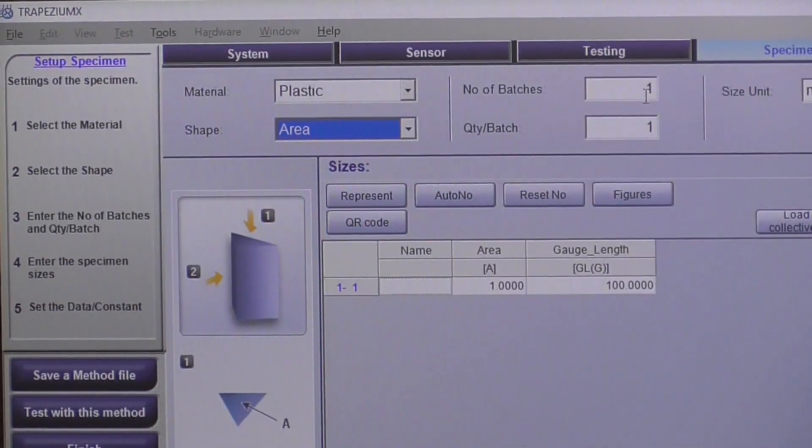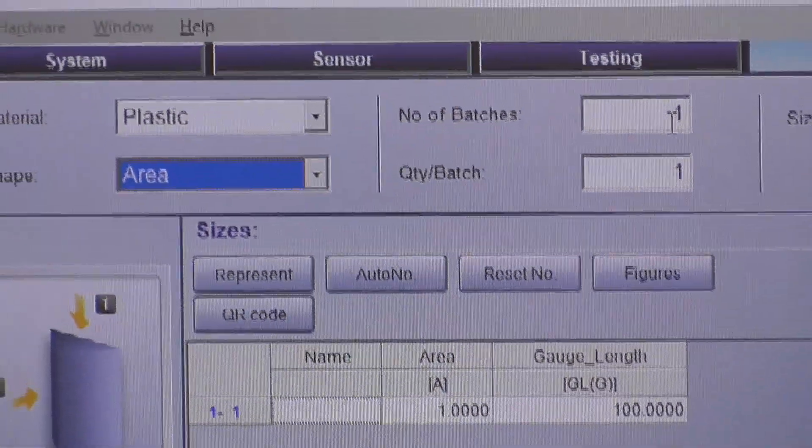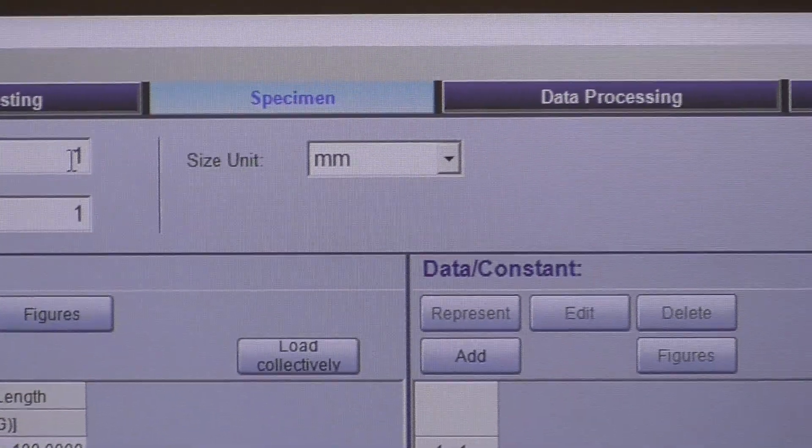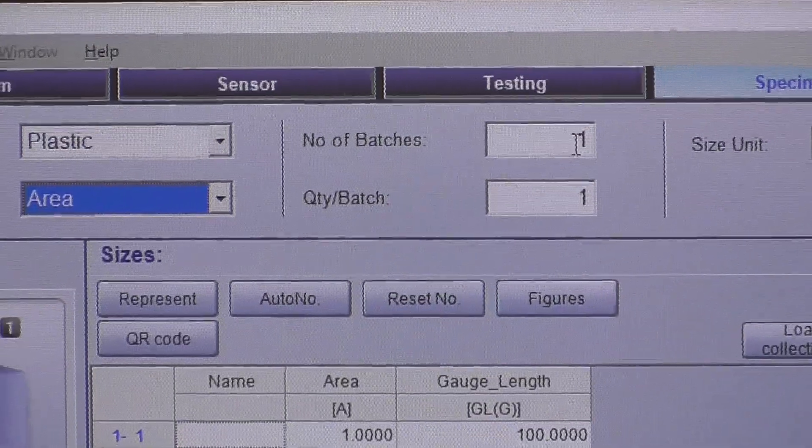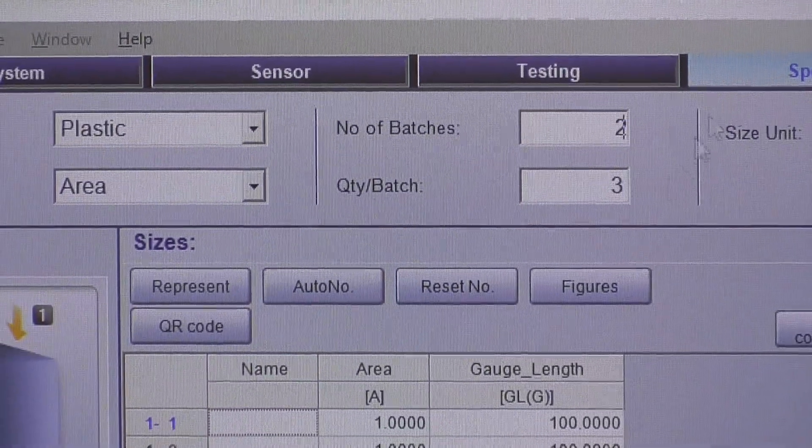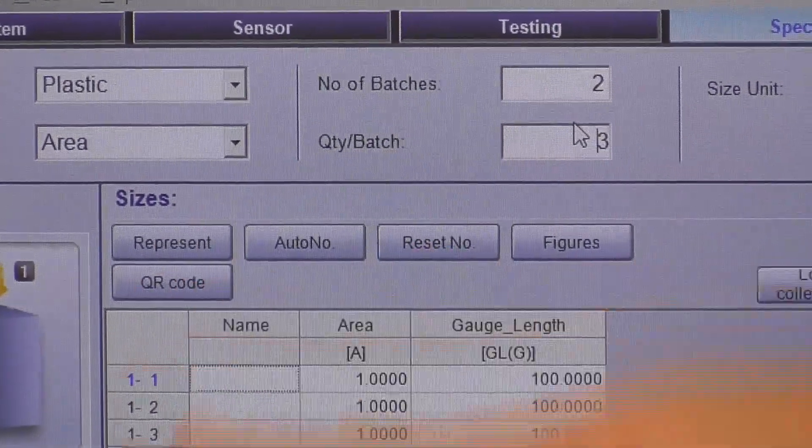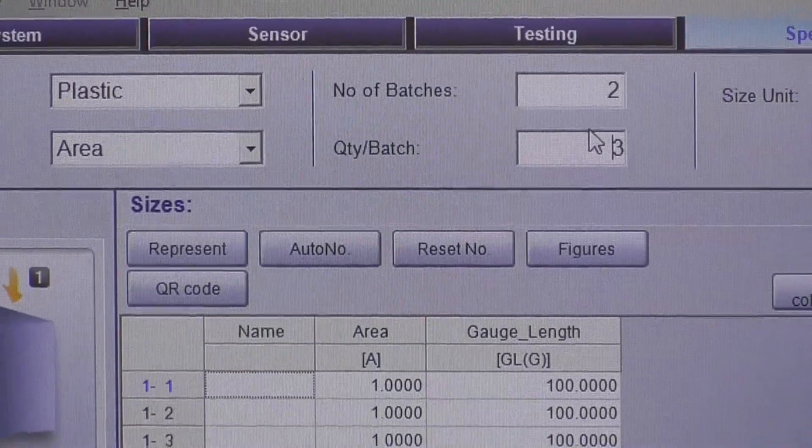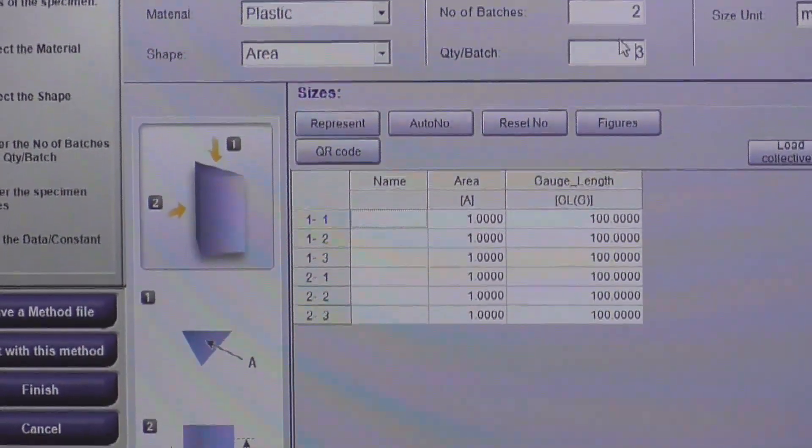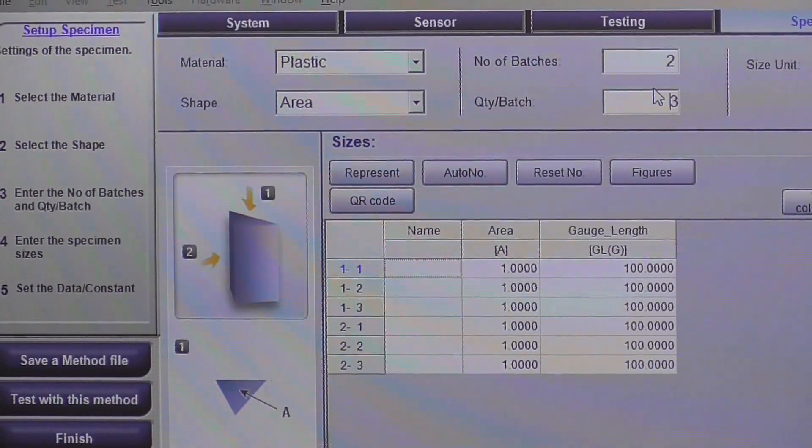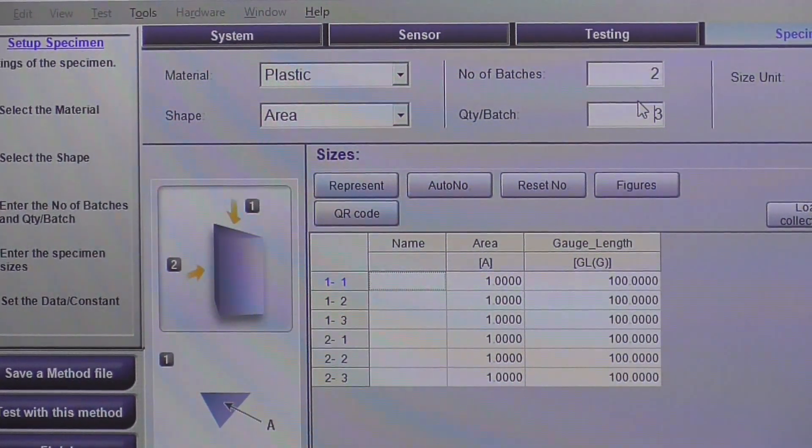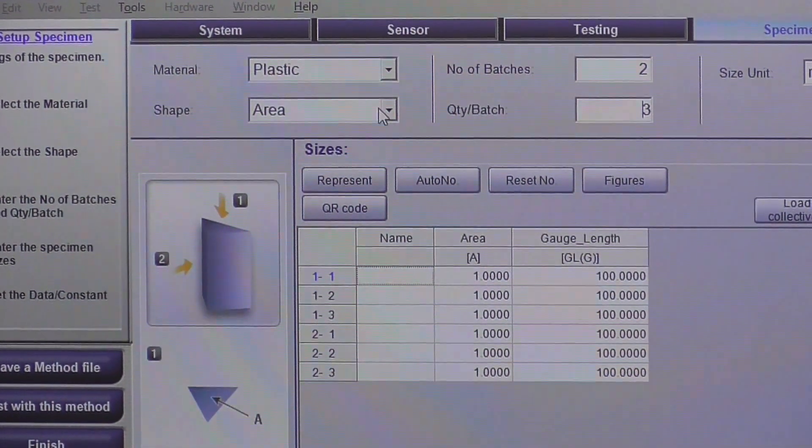Also in here you put the quantity of samples you want to run per batch, and also the amount of batches you want to run per sample. So let's just say you have two different sample sets you want to run, and you have three of each. Quantity per batch three, and we have two batches. So that'll kind of populate the type of samples that we have here. We can name the samples different things. They're auto-named by their batch and sample number. And you can also enter in the dimensions of the samples in this area too. You can enter them in later on as I'll show you, but if you kind of know the sample dimensions ahead of time, you can enter them in here.